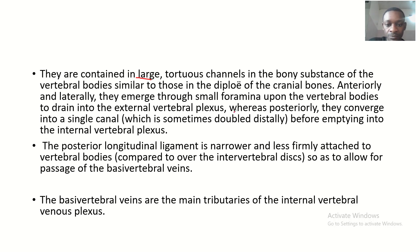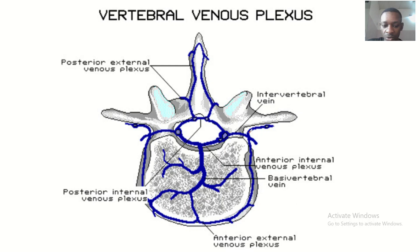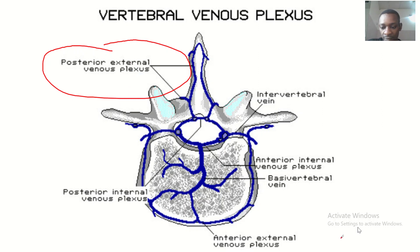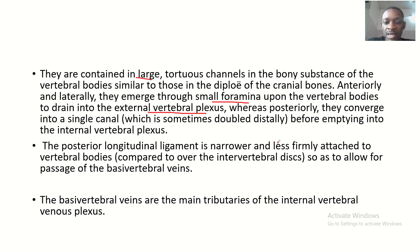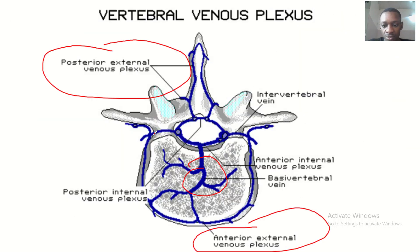Anteriorly and laterally, they emerge through small foramina on the vertebral bodies and drain into the external vertebral plexus — both the anterior and the posterior external plexus. Posteriorly, they converge into a single canal, which is sometimes double distally, before emptying into the internal vertebral plexus.